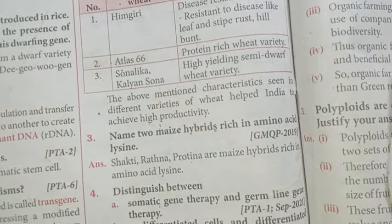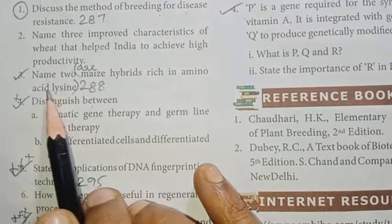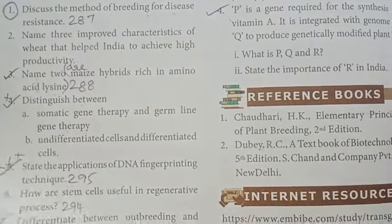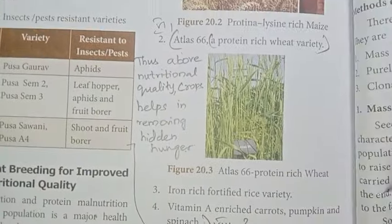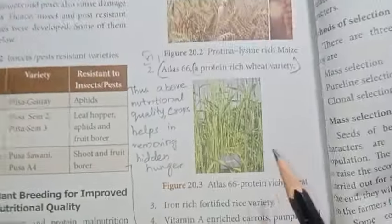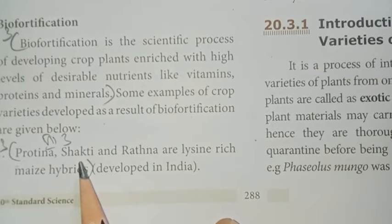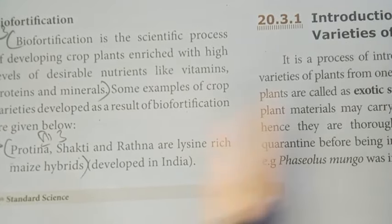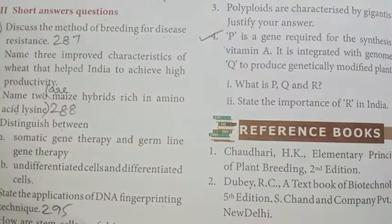Third: Name two maize hybrids rich in amino acid lysine. Page 288. Proteina, Shakti, and Ratna are lysine-rich maize hybrids.